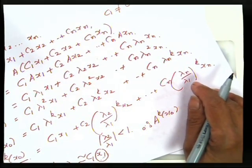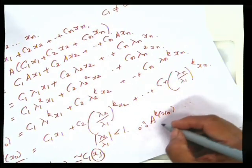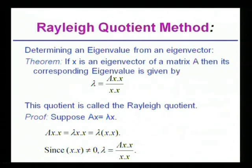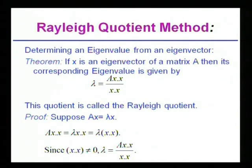Let us illustrate this. First, once we know the dominant eigenvector, how do we find the corresponding eigenvalue? This method is known as the Rayleigh quotient method.